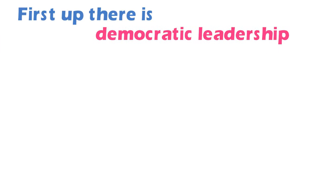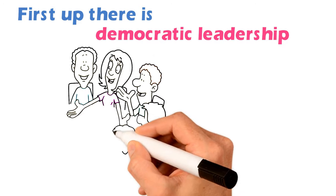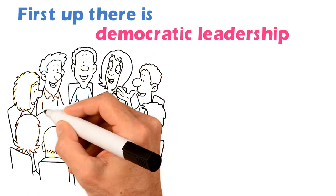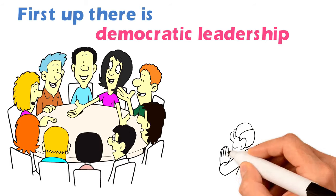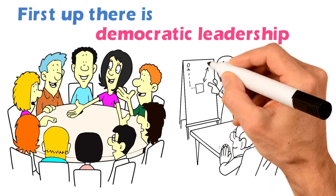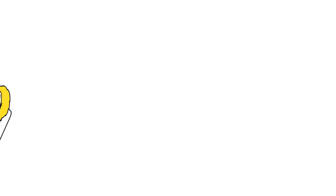First up, there is democratic leadership. This is a type of leadership style in which members of the group are involved in the decision-making process. An example of this is allowing employees to vote on decisions that are being made.